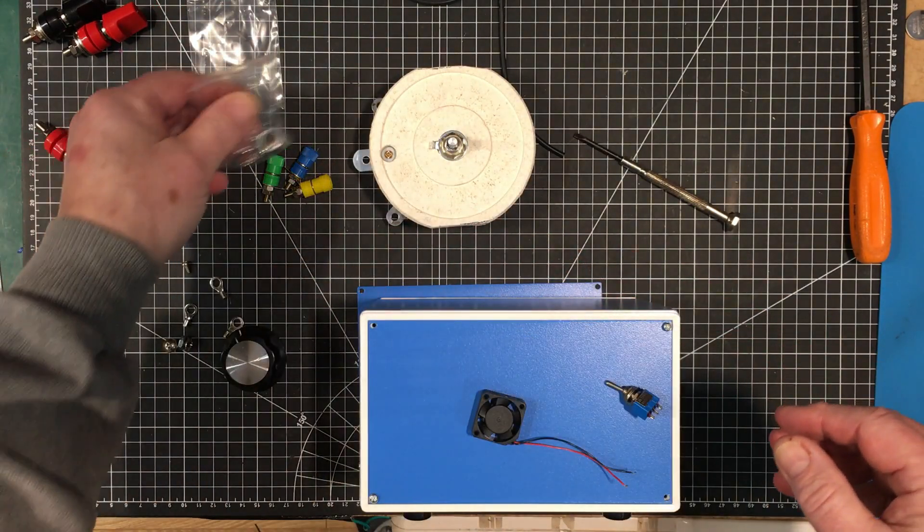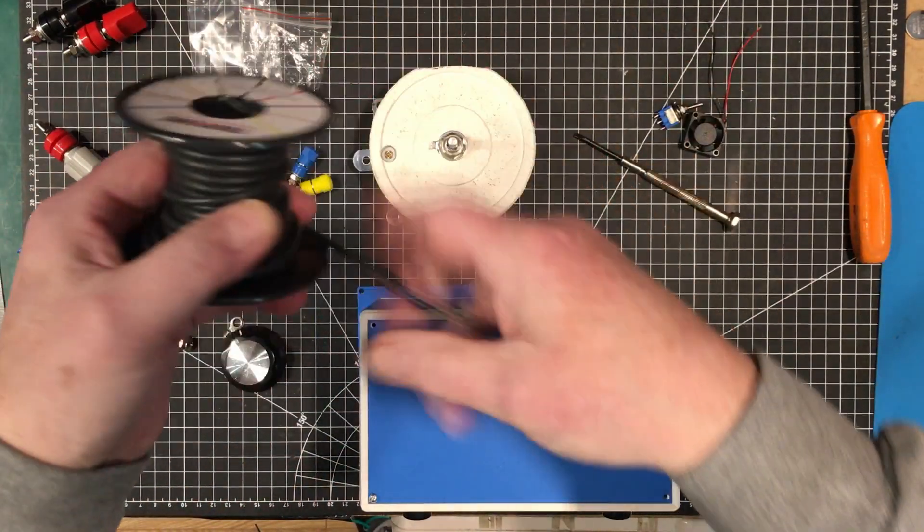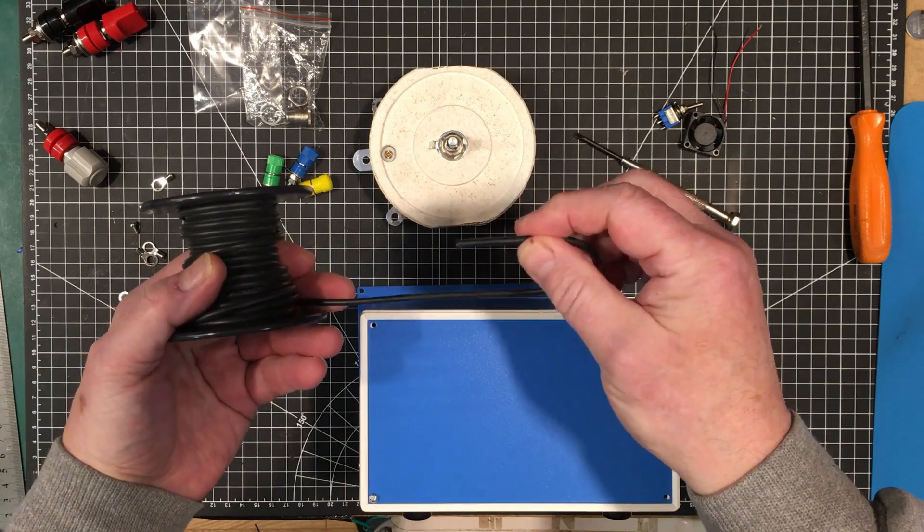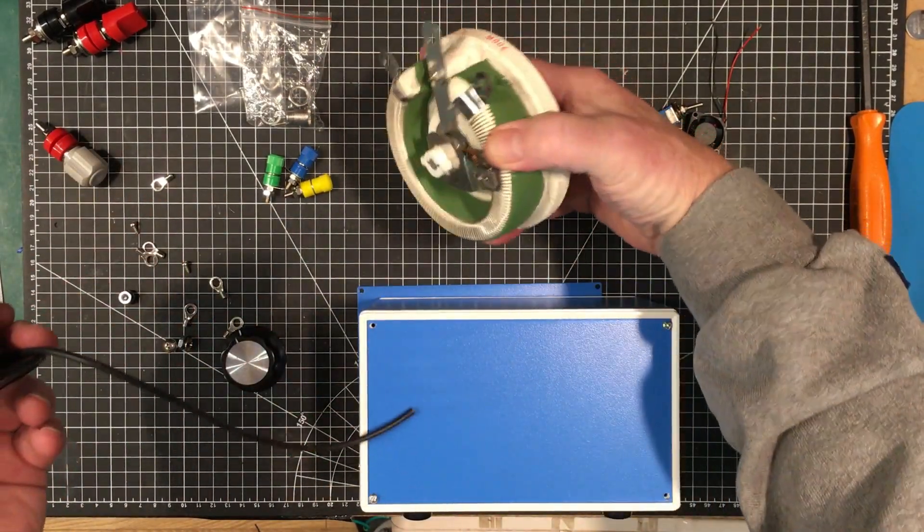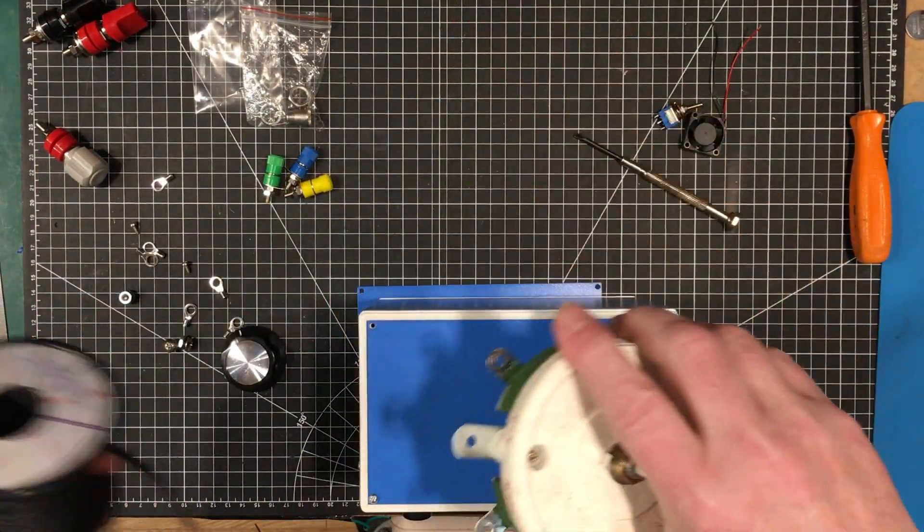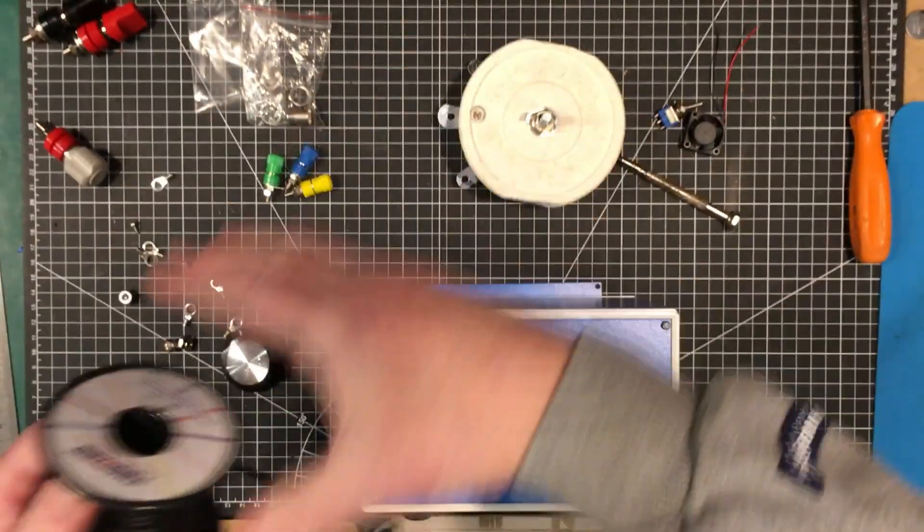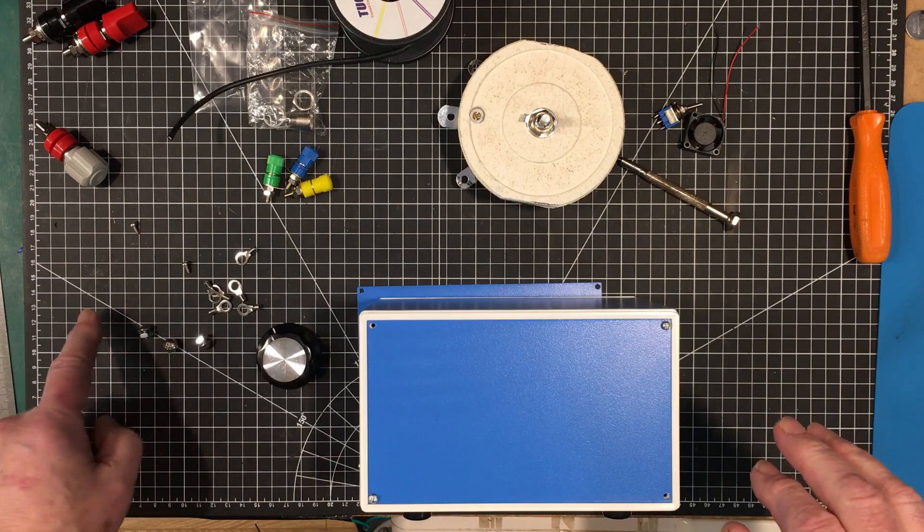I'm going to wire up the main thing here with this number 14 silicone wire. It's really nice wire, way bigger than I need for 2 amps, and I'll wire this to the terminals using these crimp on terminals.